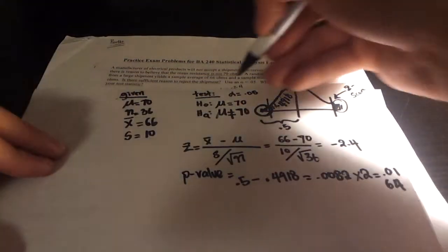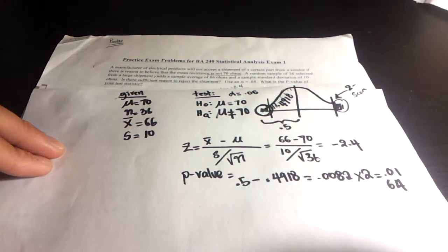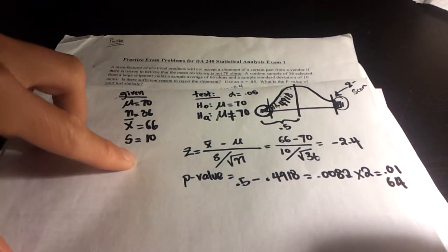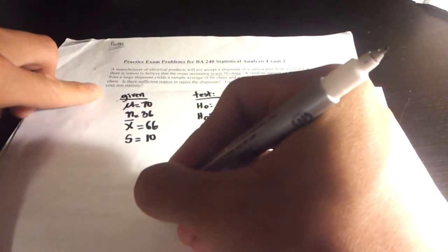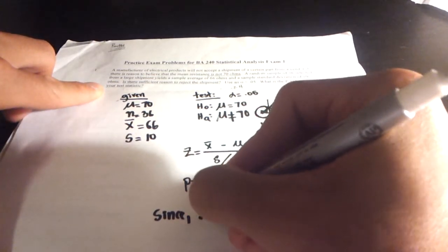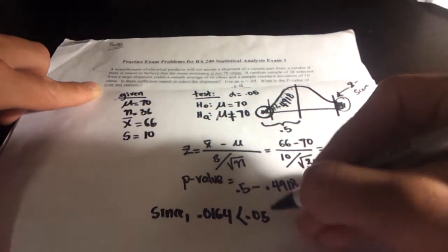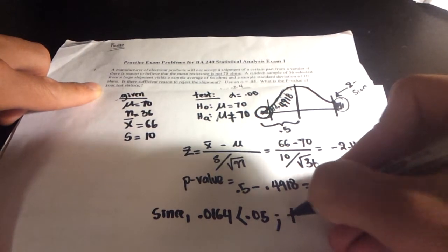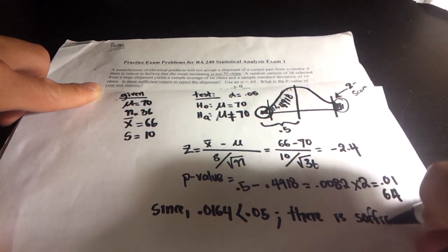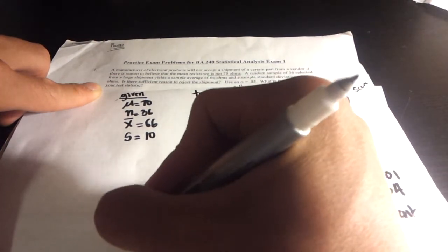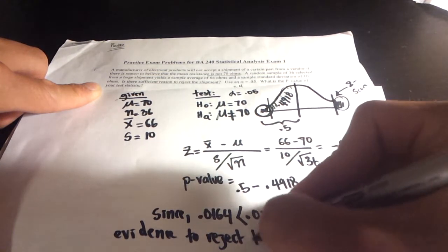Alright, so now we can take this and compare it to our alpha level. So if this number turned out to be smaller than the alpha level, then we have sufficient evidence to reject the shipment. So what is our alpha level? It's 0.05. So now we can answer our question. Since 0.0164 is smaller than 0.05, we can say there is sufficient evidence to reject the shipment.